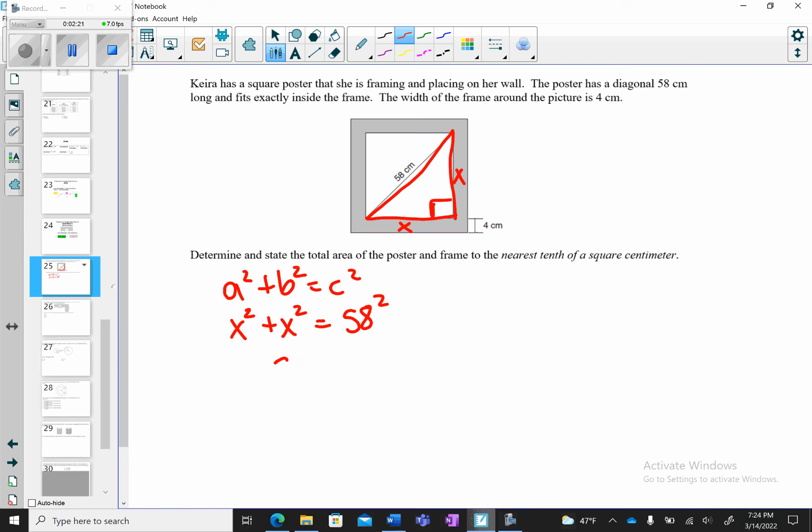So I have 2x² = 58², which is 3,364. I'm going to divide both sides by 2. And I end up getting x² = 1,682. Because it's x squared, I have to take the square root. And I roughly get 41.01219331. So that tells me that x is represented by about 41.